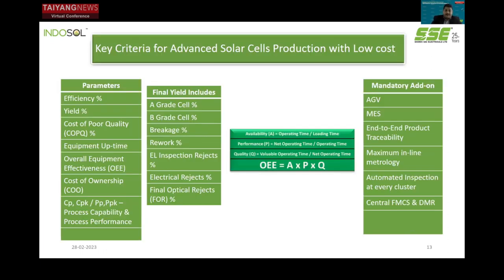Some key criteria for the selection of advanced solar cell production for lower cost include: efficiency percentage, yield percentage, overall equipment effectiveness, cost of ownership, process capability, and process performance. The final yield must account for A-grade cell percentage, B-grade cell percentage, breakage percentage, rework, electroluminescence inspection rejects, electrical reject percentage, and final optical rejects. What used to be optional features when designing a factory are now mandatory add-ons: AGVs, MES, end-to-end product traceability, maximum inline metrology, automated inspection at every cluster, central FMCS, and DMR.